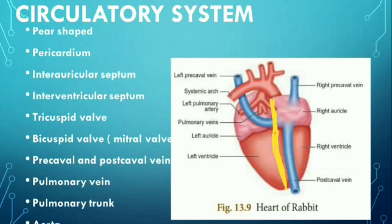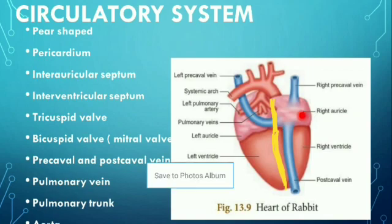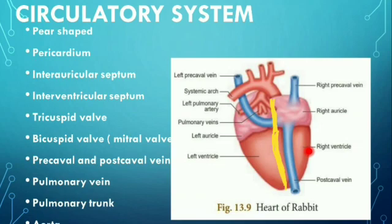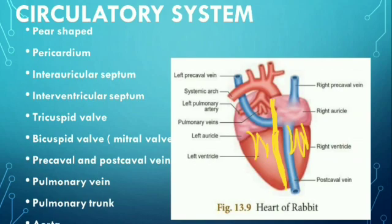Next is the tricuspid valve. This is a three flap-like structure which is present between the right auricle and the right ventricle. Then the bicuspid valve, otherwise known as the mitral valve, is present between the left auricle and the left ventricle. It has two flap-like structures, so it is called the bicuspid valve.